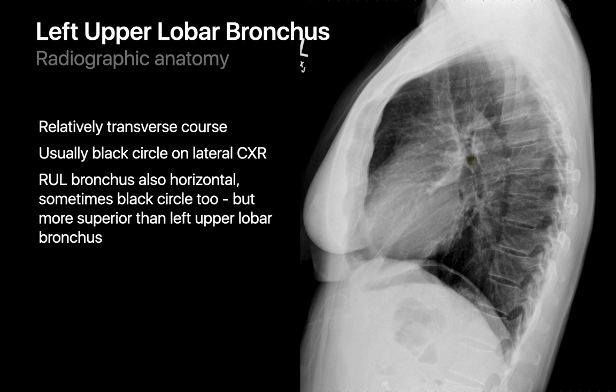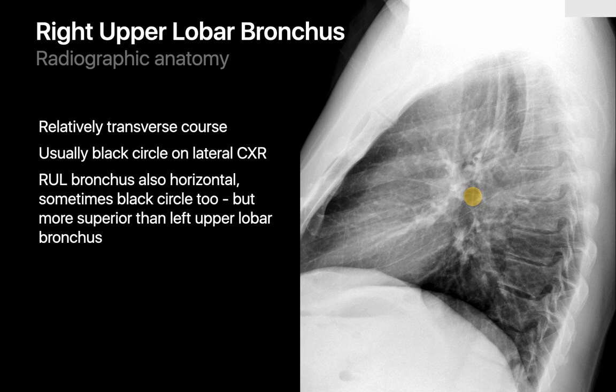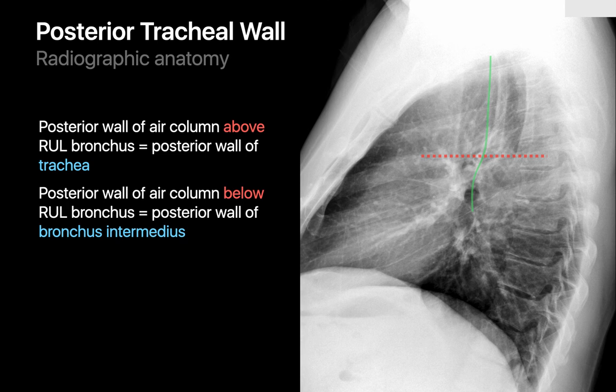The right upper lobe bronchus also has a relatively transverse course and is often visible as a black circle on lateral images, just superior to the level of the left upper lobe bronchus. The straight linear interface along the posterior margin of the tracheal air column corresponds to the posterior tracheal wall, from the thoracic inlet to just above the right upper lobe bronchus.